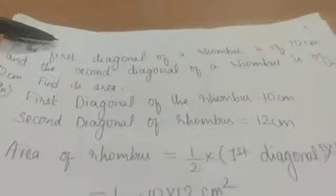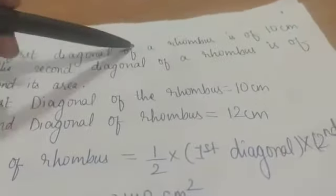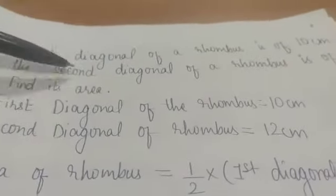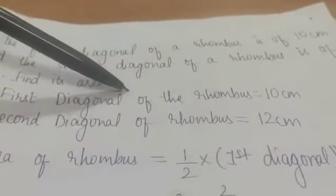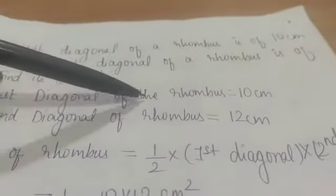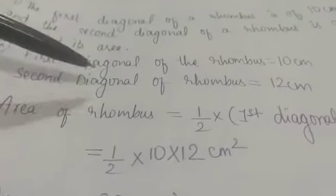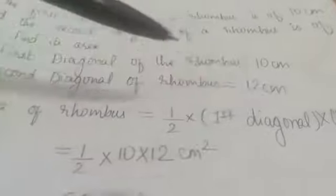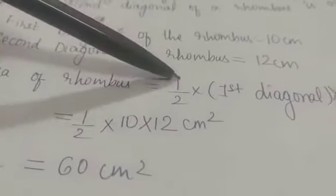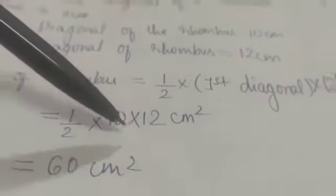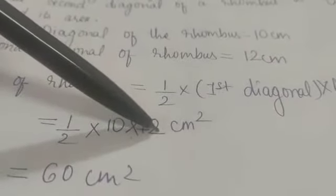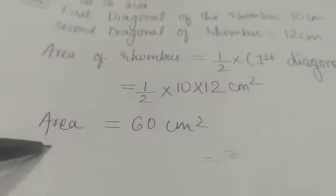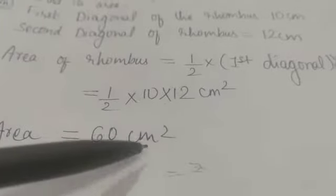Let us take an example. The first diagonal of a rhombus is 10 cm and the second diagonal is 12 cm. Find the area of the rhombus. Area of rhombus equals half into first diagonal into second diagonal, so we put the values: half into 10 into 12, and on solving we get the area of rhombus as 60 cm square.